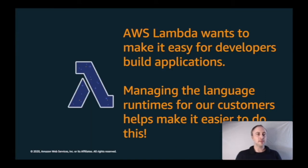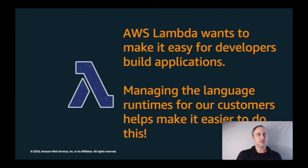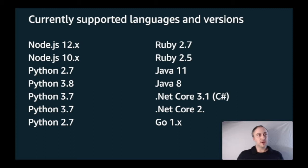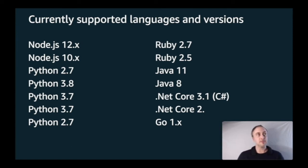One of the fundamental goals of the AWS product team is to make it easier for developers to build applications, and one way they do this is to manage runtimes for customers. There are a number of natively supported runtimes, and AWS is constantly updating, patching, and adding new ones. You'll notice PHP is not on this list — it's not what the majority of customers are building on — but as PHP developers we know it still runs about 80% of the web.